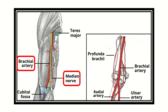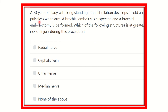Welcome to another question and answer session for the MRCS exam. In this question, we have a seventy-three-year-old lady with long-standing atrial fibrillation who develops a cold and pulseless upper limb. A brachial embolus is suspected and a brachial embolectomy is performed. Which of the following structures is at greatest risk of injury during this procedure?